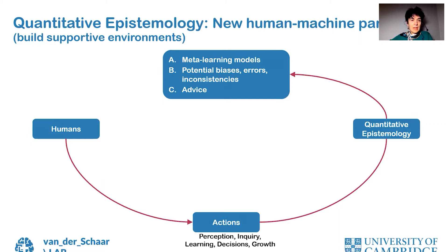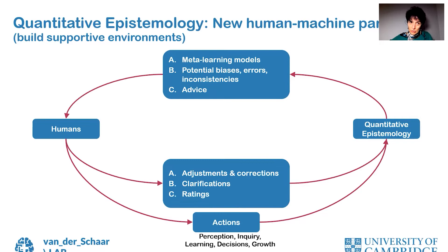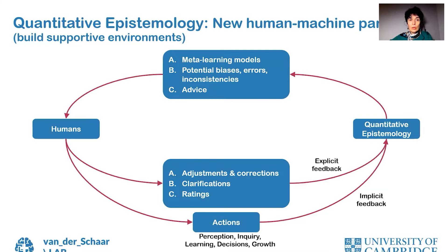Mottsley also mentioned, besides the theory of human learning, that there is a need for building supportive environments to support the meta-learning of humans. As humans are acting and making decisions, quantitative epistemology can distill this information in the form of meta-learning models, identifying potential biases and errors as well as inconsistency in decision-making, and generate new advice. Humans can take this information into consideration and provide implicit and explicit feedback to quantitative epistemology — through their actions that may be changing over time as implicit feedback, and by providing adjustments, corrections, clarifications, or ratings of the advice as explicit feedback — thereby creating a supportive environment for humans.